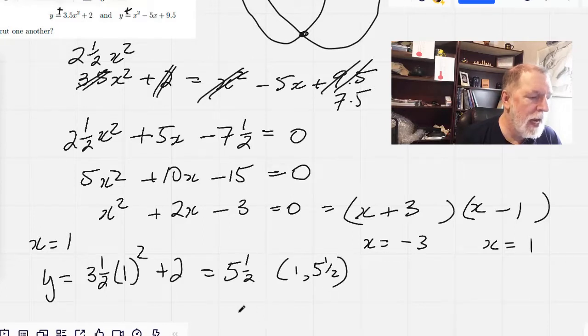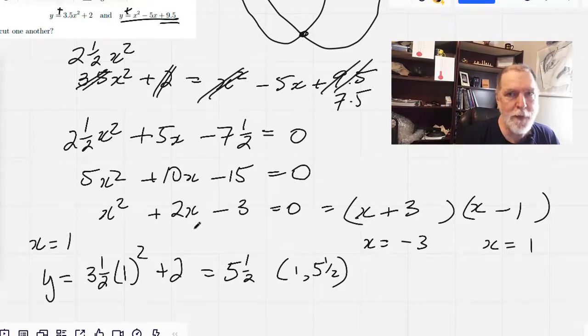And we could have just as easily have plugged that into this second equation here. We should get the same thing. That would be a way to check this. Now for x equals negative 3.